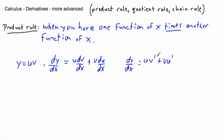This shortcut version only works if you've got a single-variable equation, and for beginning calculus that's mostly what you'll get. But as you get more advanced, it becomes important to use the formal notation, because y might depend on x, z, q, or other variables. As long as everything is in one variable — just x's — you can get away with this shortcut. This is the product rule.